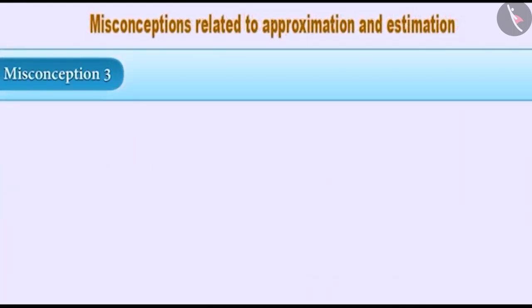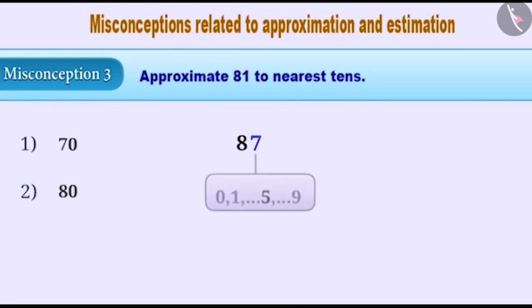Misconception 3: Approximate 81 to the nearest tens. If the digit in the units place is 5 or greater than 5, then while approximating to the nearest tens, the digit to its left is increased by 1.